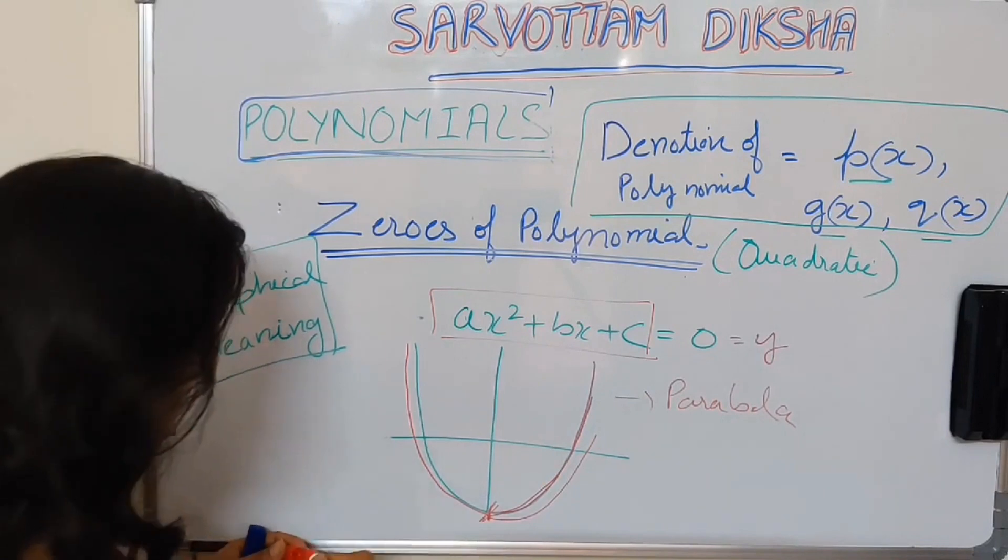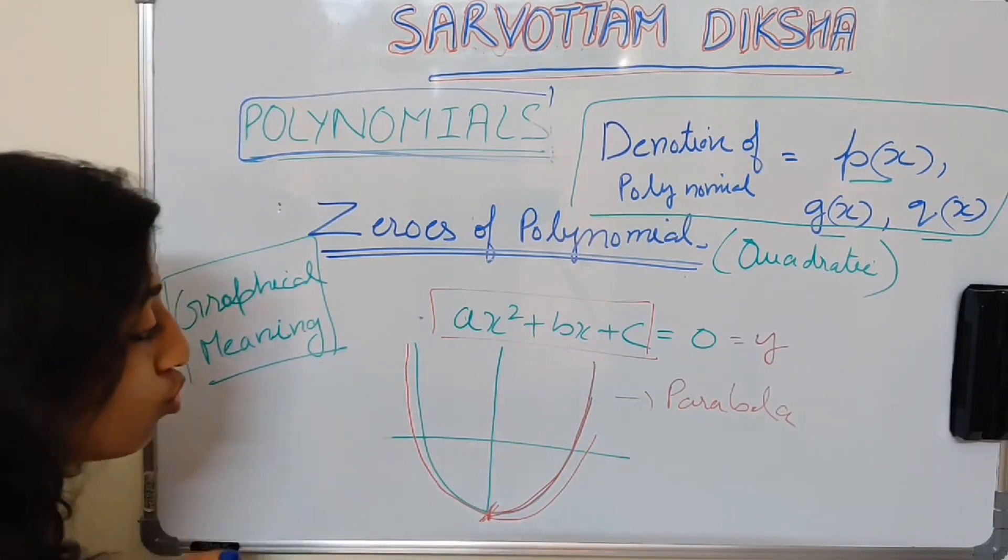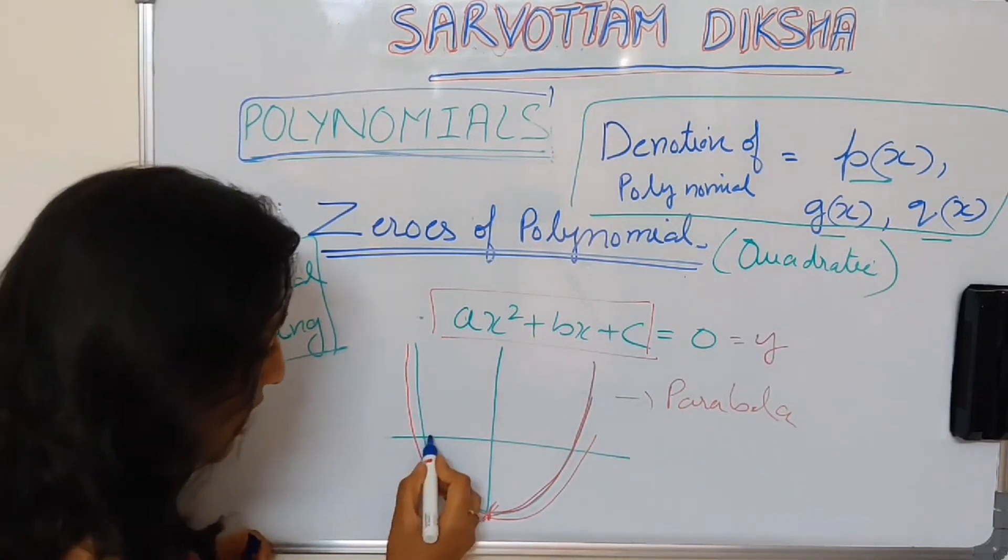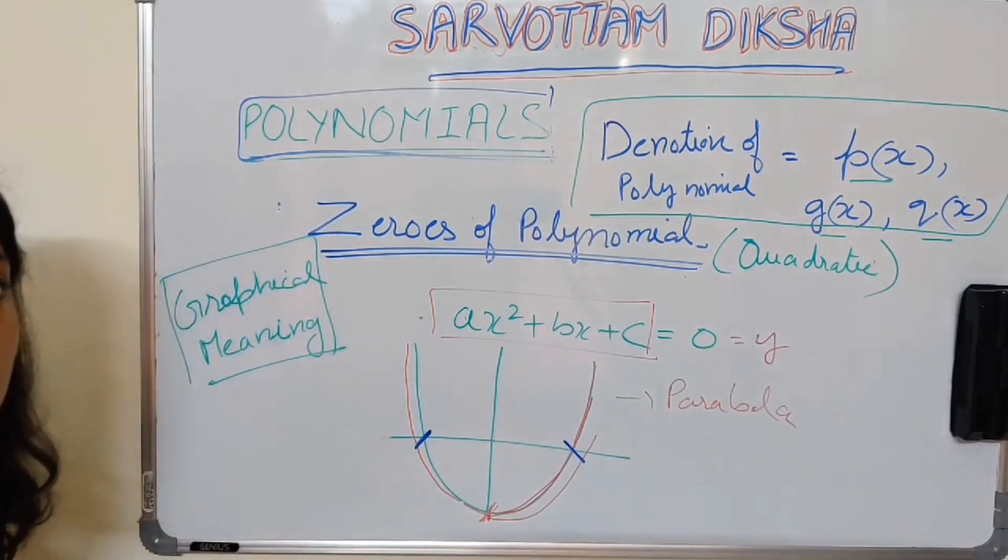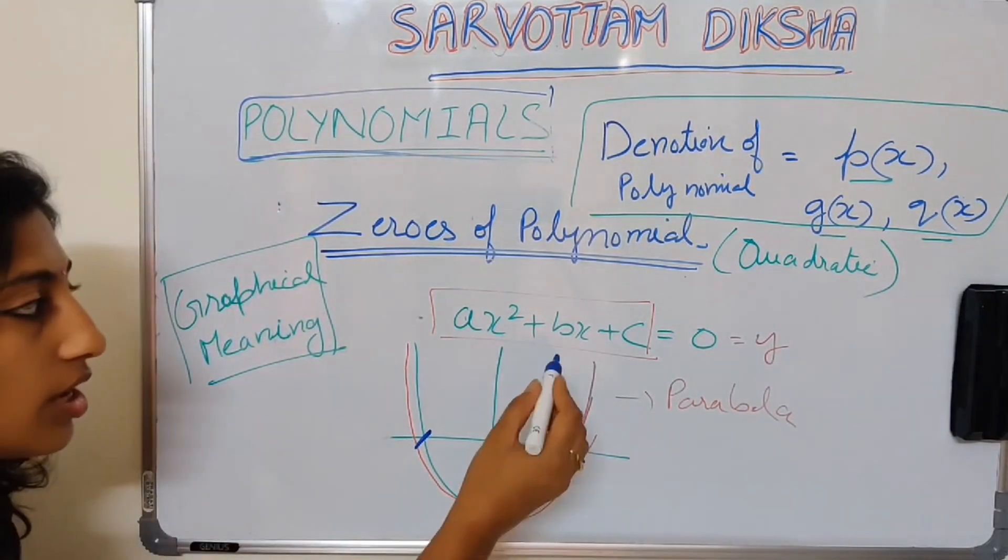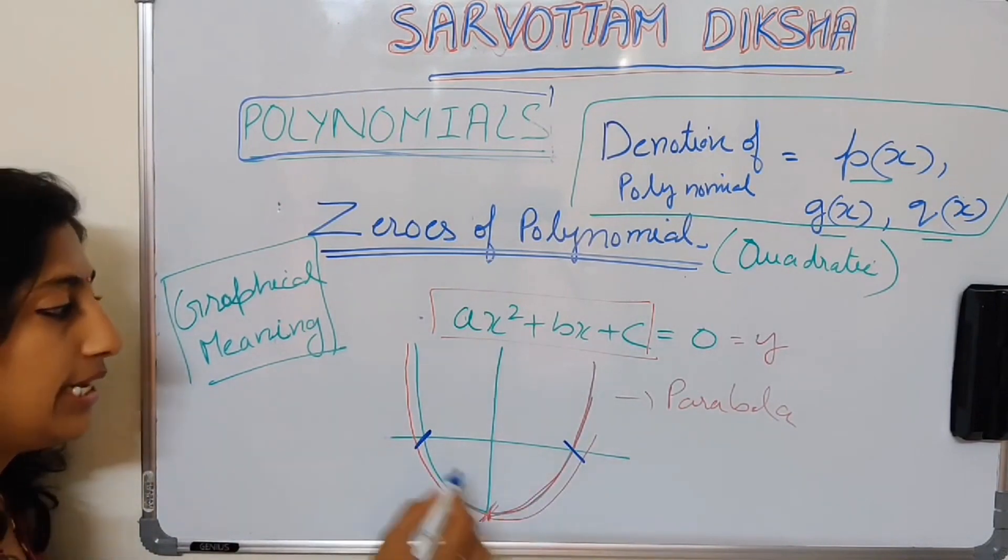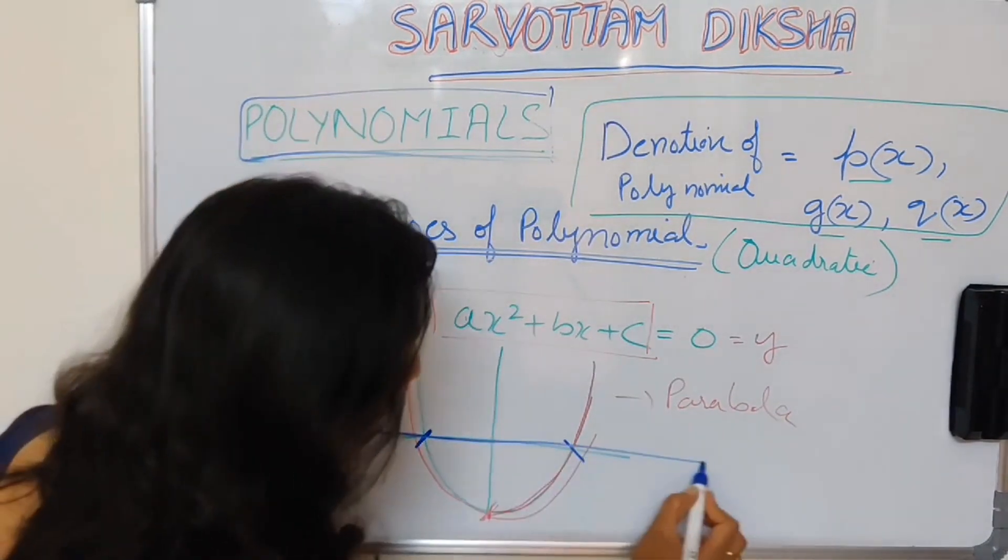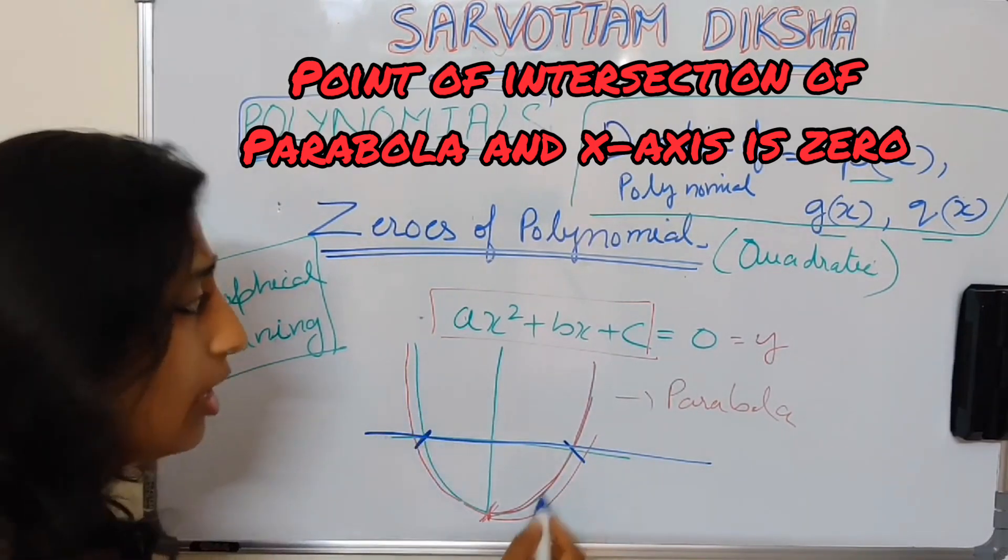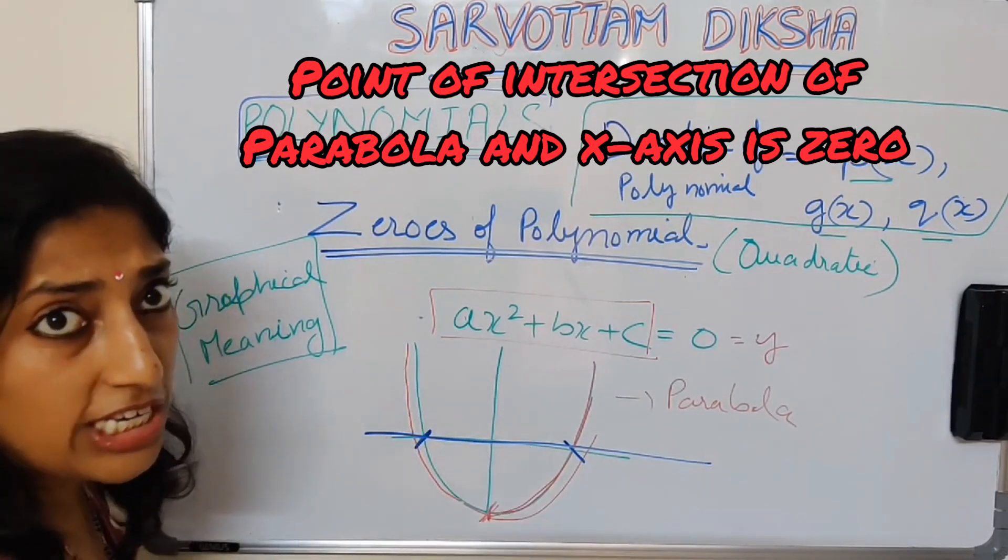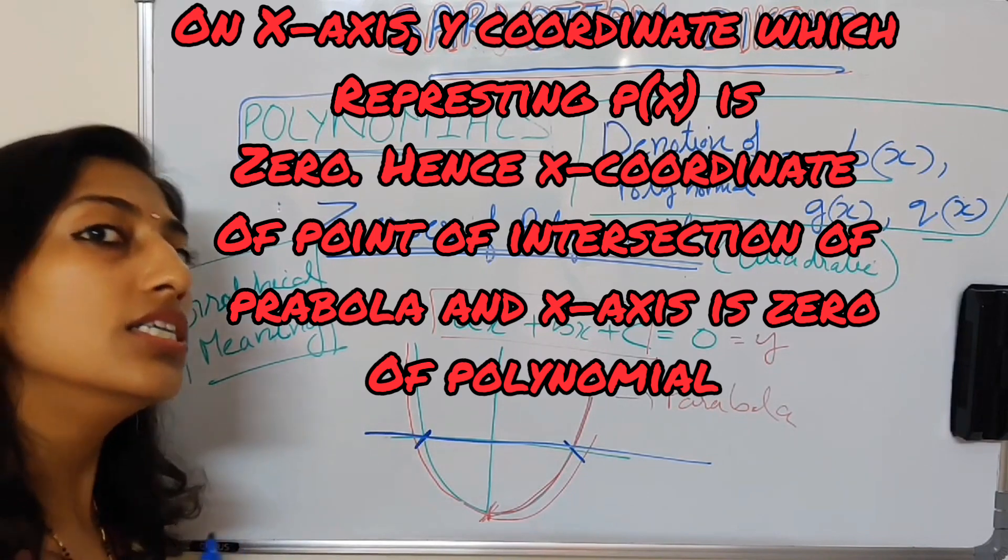So obviously when it has made a u turn, it is possible for my parabola, the graphical representation of quadratic polynomial, to intersect at two points. This will be one 0 and this will be one 0. I have explained wherever the graphical representation is intersecting my x axis will be the 0 of polynomial, because at that particular point my y is becoming 0.